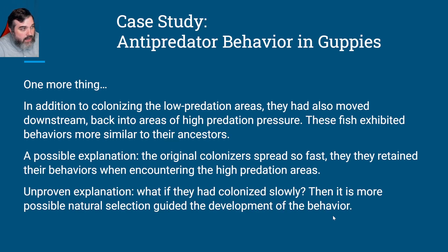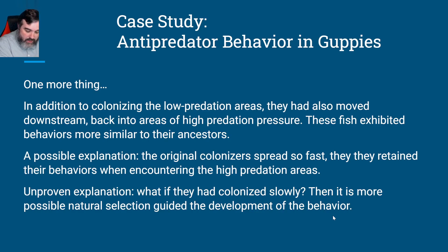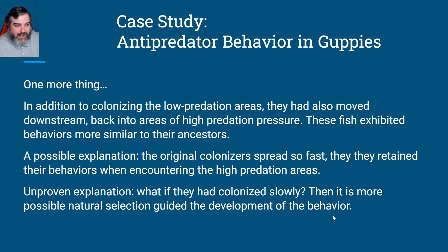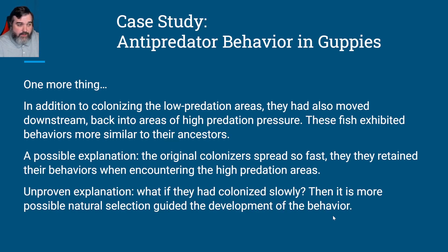In addition to colonizing the low predation areas, some had also moved back downstream into areas of high predation pressure. These were originally high predation fish whose offspring went into the low predation area and acted like low predation fish. Those fish then moved into a high predation area, and they exhibited behaviors more similar to their ancestors — if the fish are in an area of high predation, they act a certain way.